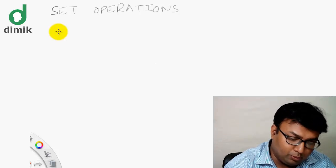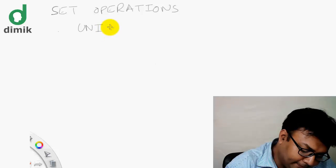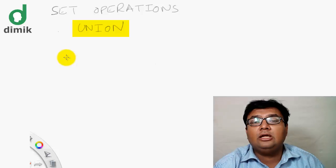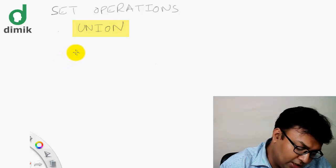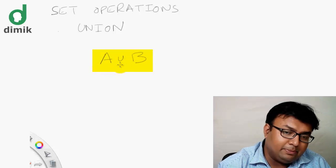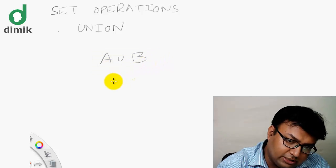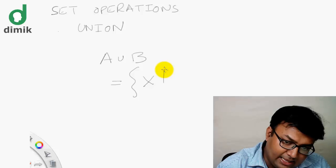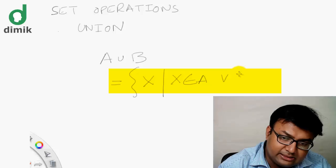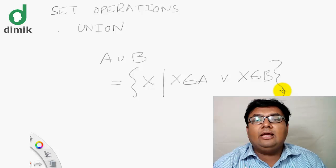The first set operation is union. Union is written as a binary operation, meaning it requires two sets. We write A union B using set-builder notation: A union B contains elements x such that x is a member of A or x is a member of B.